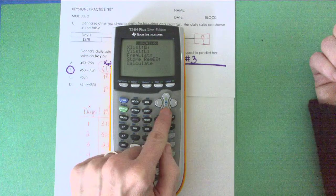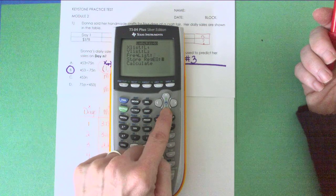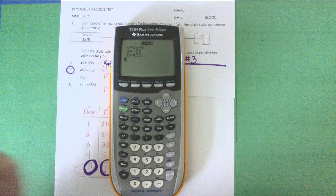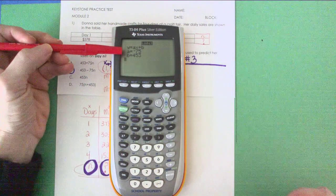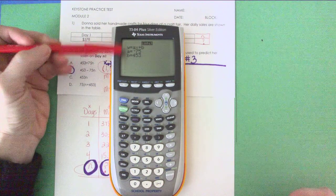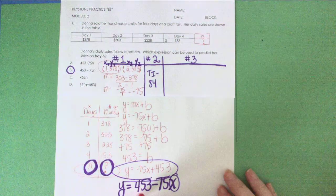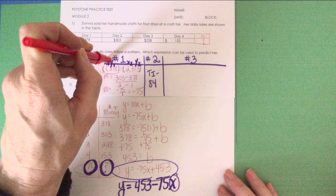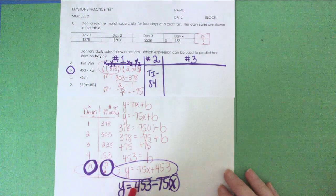Are our X's in list one? Yes. Are our Y's in list two? Yes. So we're going to arrow down to calculate. And there it is. Notice they start with Y equals AX plus B. They're telling you that A is negative 75 and B is 453, and that is going to equate exactly with my equation that I wrote when I did it by hand in part one. So method one, write the equation by hand; method two, use the TI-84.